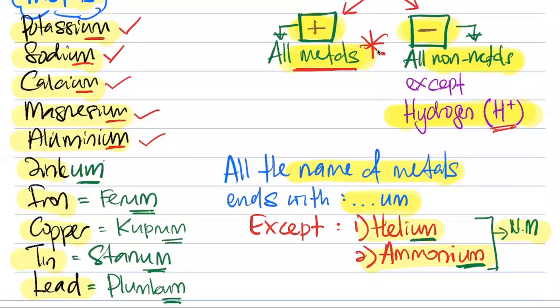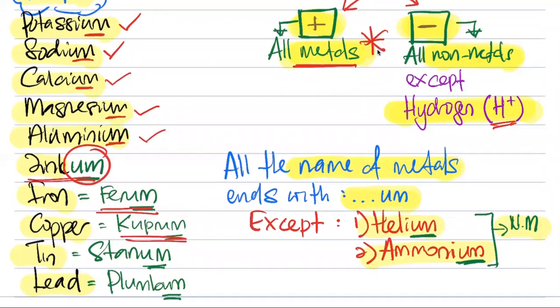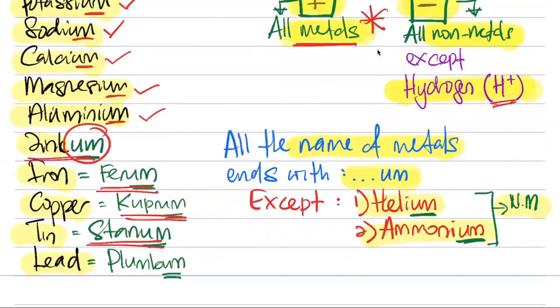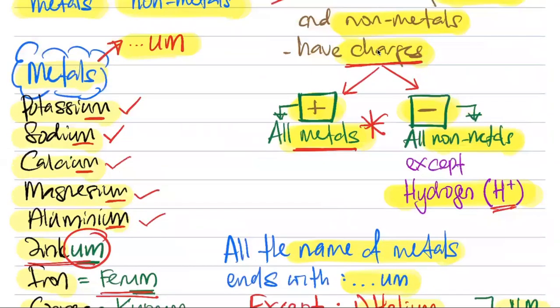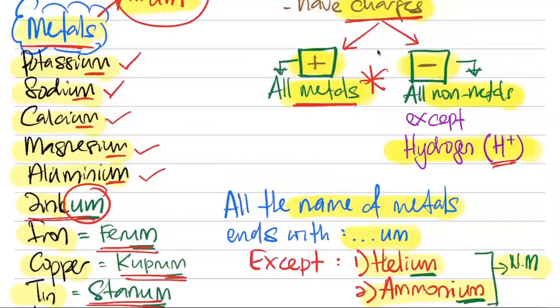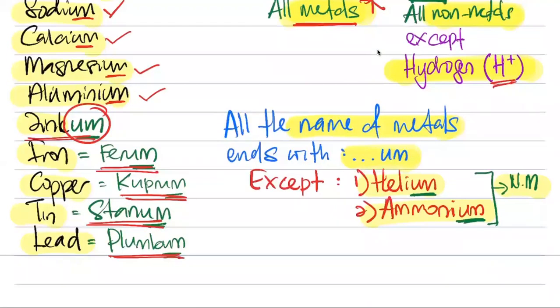Now even though these names don't have um, because they have their own scientific name. For example, zinc, you just add the words um there, it becomes zincum. The scientific name for zinc is zincum, iron will be ferrum, copper will be cuprum, tin will be stanum, and lead will be plumbum. So from here, as a conclusion, all metals the name will finish with um.